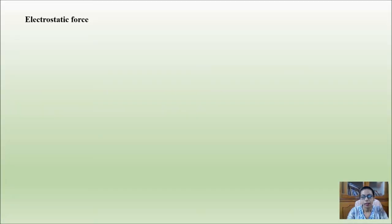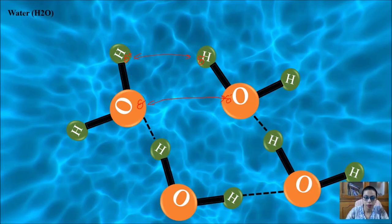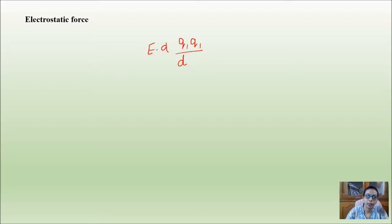The force overcoming this repulsion lies in the electrostatic force. Electrostatic force is directly proportional to the charges but inversely proportional to the distance between two charged molecules. The distance between hydrogen and oxygen is very small because hydrogen is much smaller than oxygen. This small distance leads to a higher electrostatic force, which overcomes the repulsive charges between oxygen-oxygen and hydrogen-hydrogen pairs.